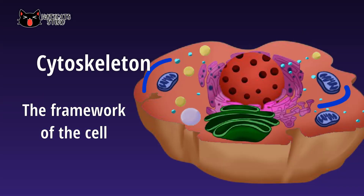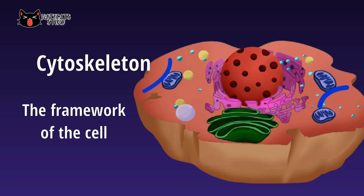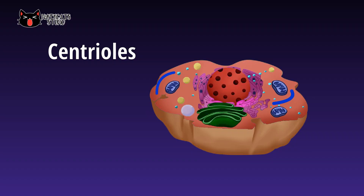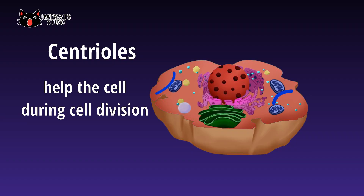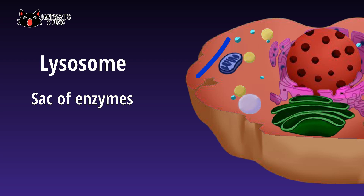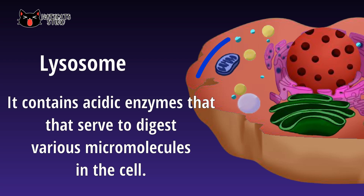The cytoskeleton is the framework of the cell, made up of microtubules and microfilaments. By spreading throughout the cell, it helps maintain the cell's shape while ensuring its elasticity. Centrioles are cylindrical organelles found in most eukaryotic cells containing microtubules that help separate and move chromosomes during cell division. A lysosome, commonly referred to as sacs of enzymes, are membranous organelles containing acidic enzymes that digest various macromolecules in the cell.